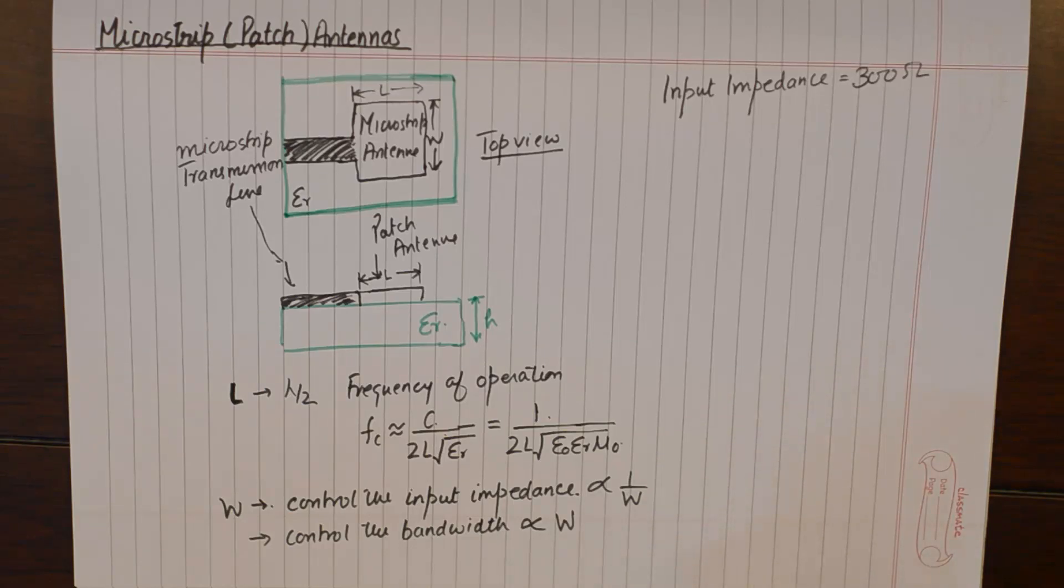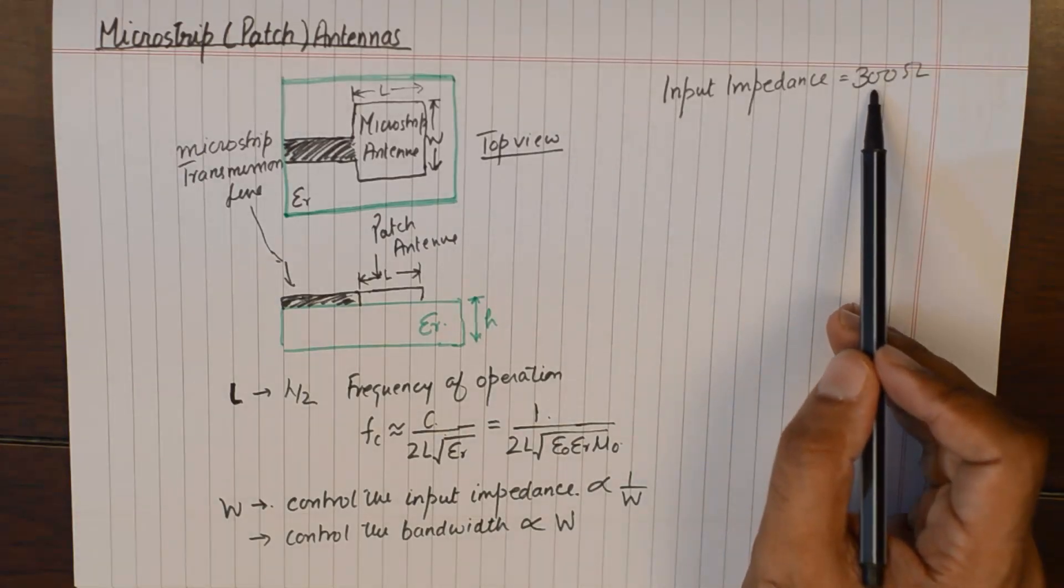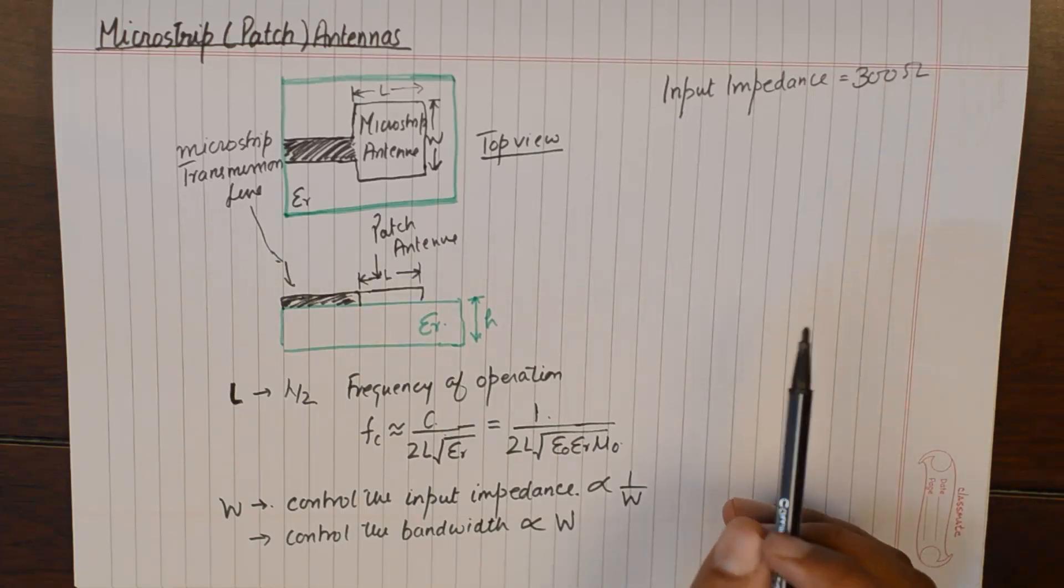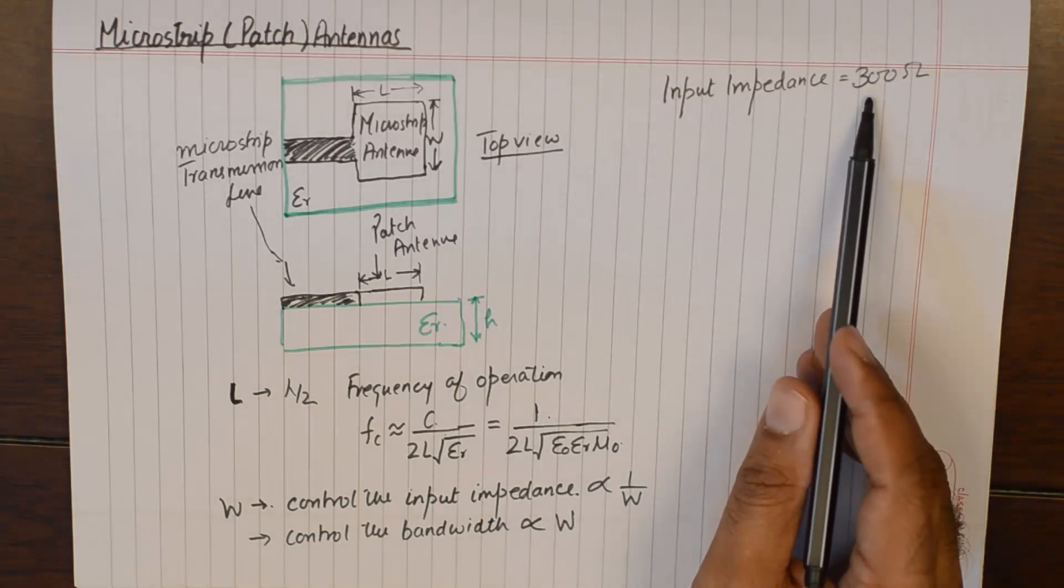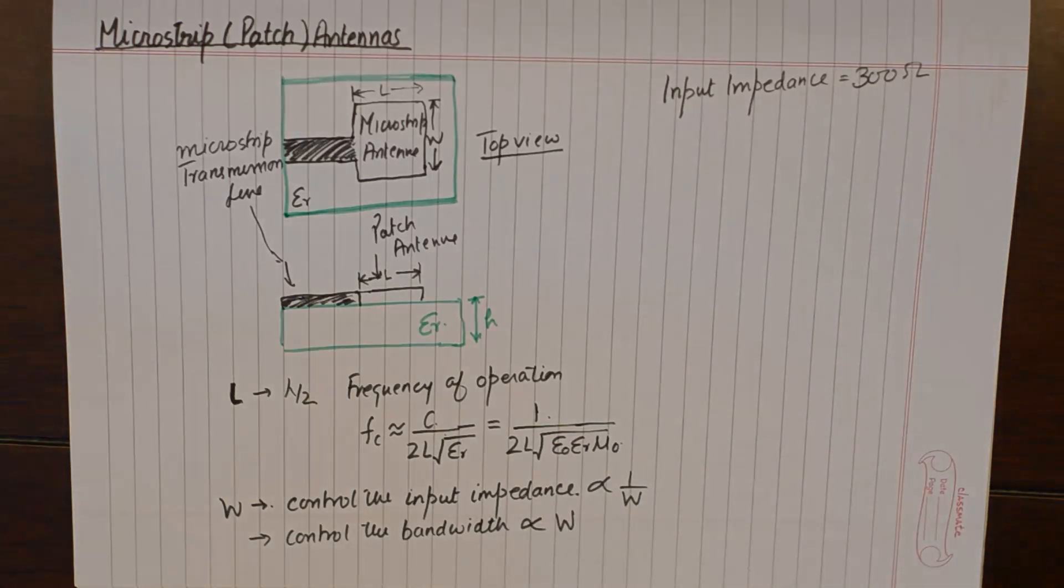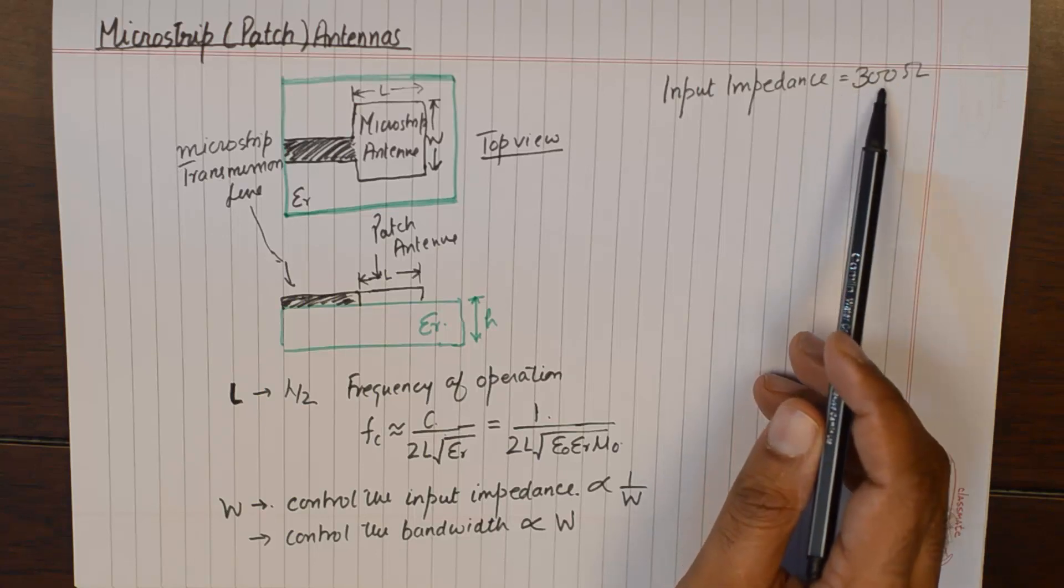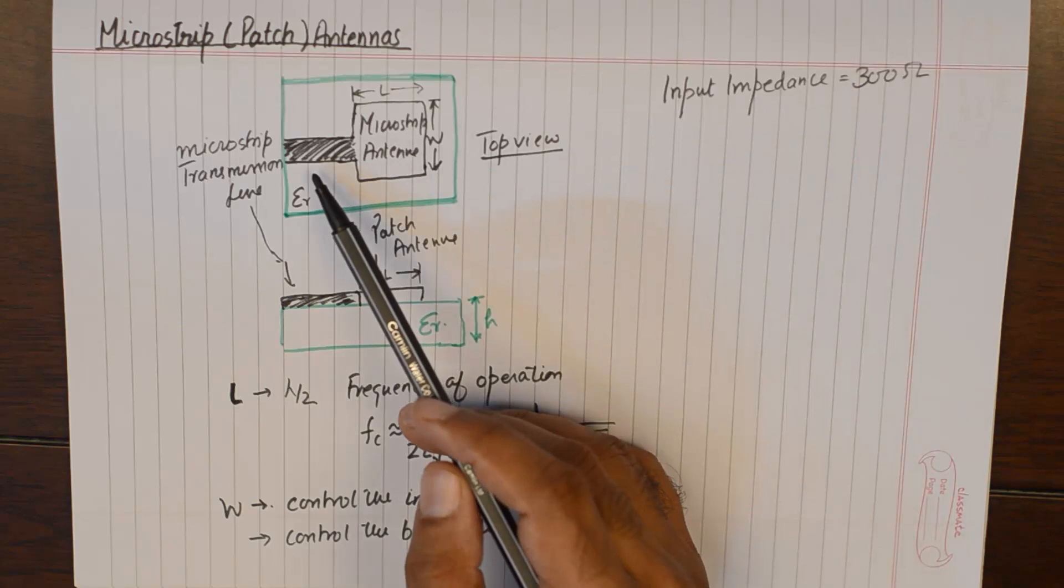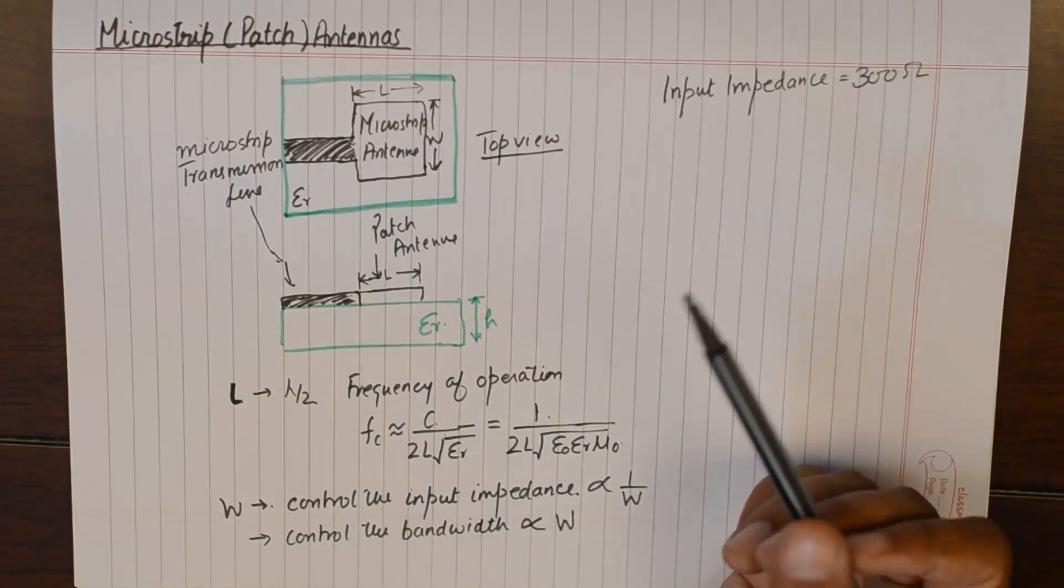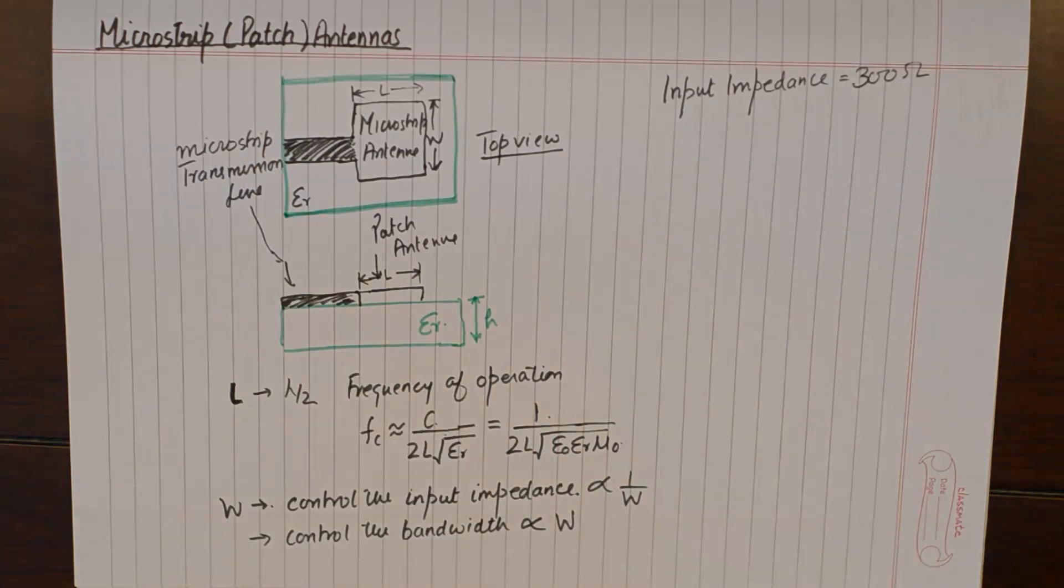If we talk about the value of impedance in terms of its matching ability to air, this value looks decent enough. But if we talk about the impedance of this antenna as 300 ohms with its matching capability to the transmission line, there is a huge mismatch because the signal will be fed to this microstrip antenna via a transmission line that will have an approximate value of input impedance closer to 50 ohms.